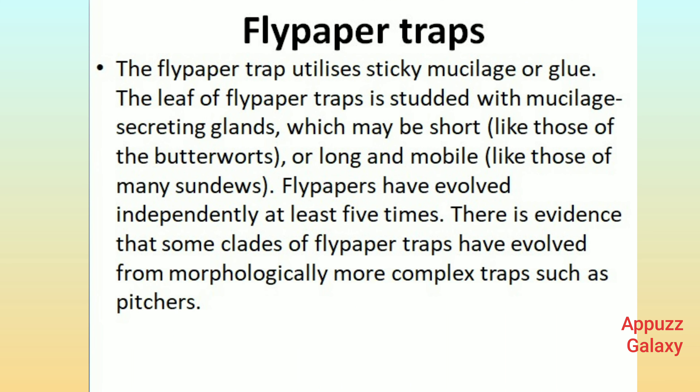The flypaper trap utilizes sticky mucilage or glue. The leaf of flypaper traps is studded with mucilage-secreting glands, which may be short, like those of the butterworts, or long and mobile, like those of many sundews. Flypapers have evolved independently at least five times. There is evidence that some clades of flypaper traps have evolved from morphologically more complex traps such as pitchers.